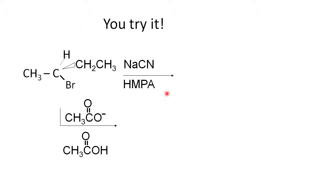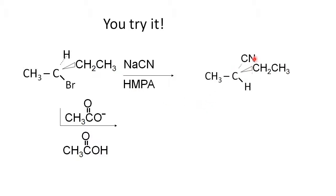Now try these two problems. For the first substrate, I see it's a secondary carbon, so either SN1 or SN2 can occur. Looking at the reaction conditions, I see a good nucleophile and a polar aprotic solvent. Secondary carbon, good nucleophile, polar aprotic solvent — that's going to be SN2. What do I get? The cyanide comes in and displaces the bromide. Notice inversion occurs because it's an SN2 reaction.